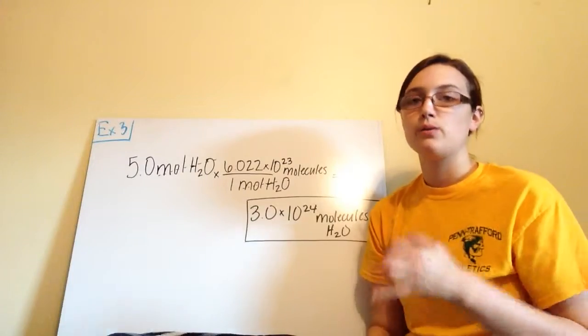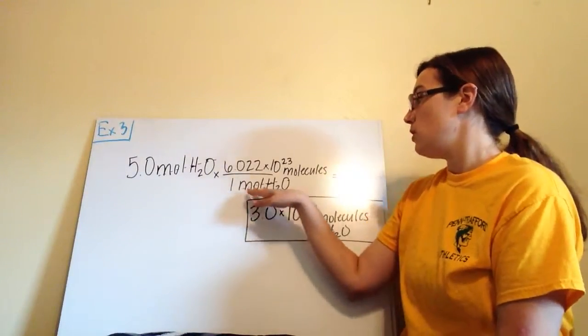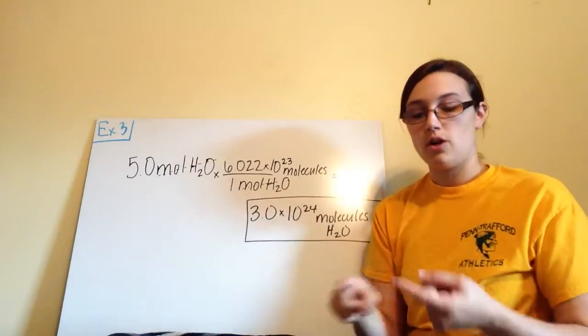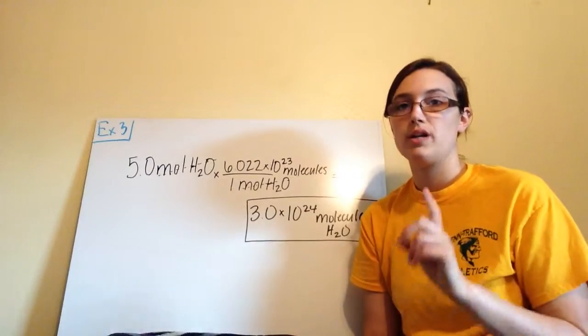Moles and molecules, or moles and atoms, that's when Avogadro's number comes into play. So for every 1 mole, no matter whether it's mole or mass or Avogadro's number, it's always 1 mole.